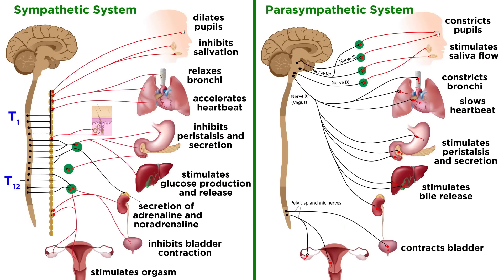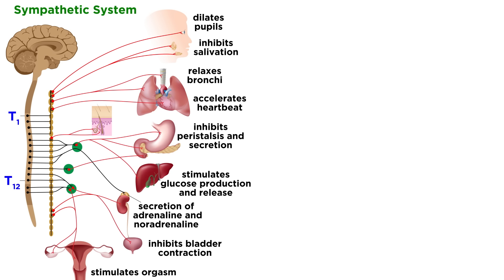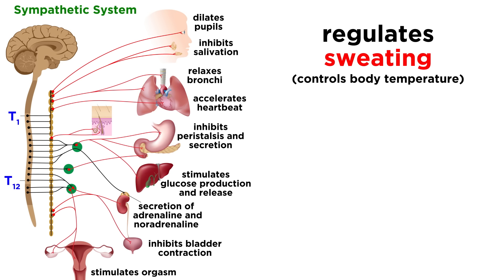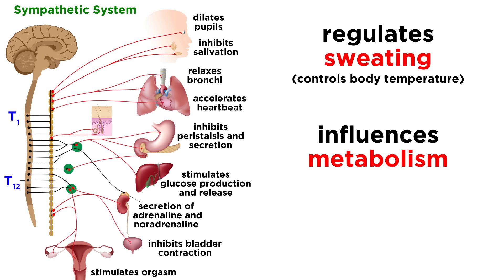Here we can see the various nerves of the two divisions and the organs they innervate. The sympathetic division also has some interesting roles: it is responsible for the regulation of sweating, meant to control body temperature, and it has an influence on metabolism as well as kidney activity.